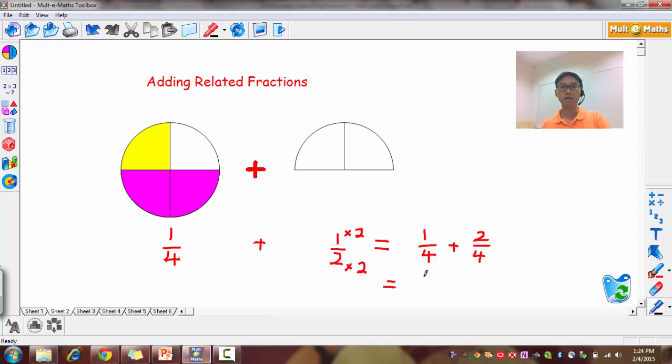Now this then becomes 2 quarters. And when I add them up, my denominator stays the same. Numerator I add, 1 plus 2, and that gives me 3. And that matches my 3 quarters I have here.